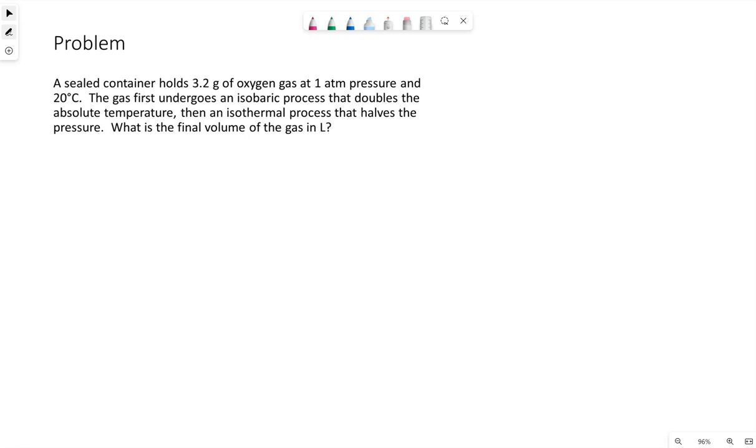We have here an example problem. A sealed container holds 3.2 grams of oxygen gas at 1 atm pressure at 20 degrees Celsius. The gas first undergoes an isobaric process that doubles the absolute temperature, then an isothermal process that halves the pressure. What is the final volume?